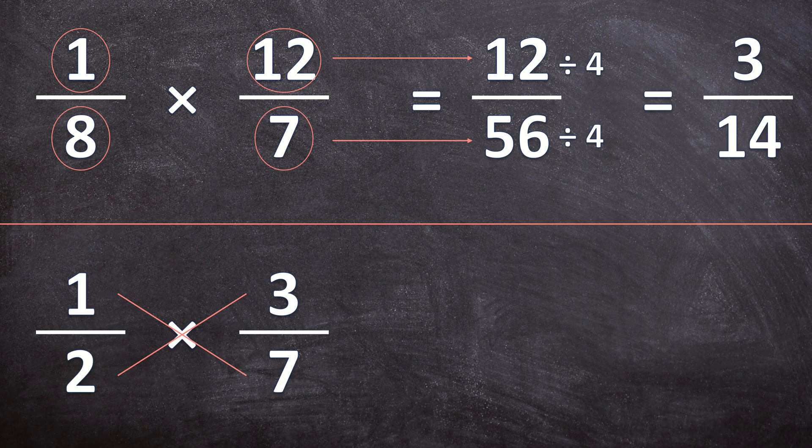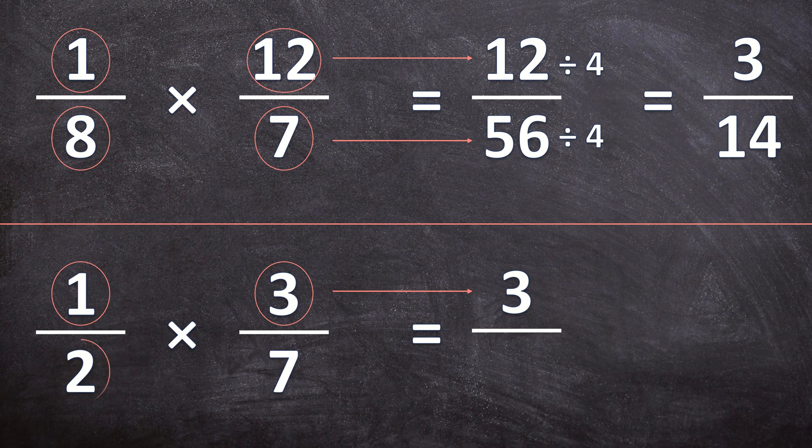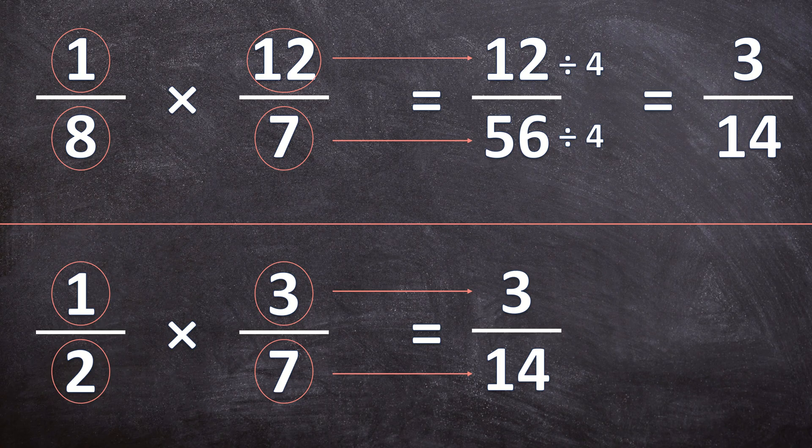And now that I simplified my fractions, I can go ahead and multiply my fractions. So my first step, multiply the numerators, and 1 times 3 is 3. And now I multiply the denominators, 2 times 7 is 14. And as you can see, both of these methods get the same answers. The first example, I simplify the answer. The second example, I simplify the fractions before I multiply.